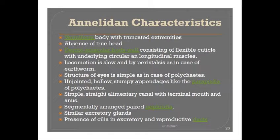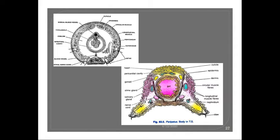The third feature is the dermomuscular body wall, composed of flexible cuticle with underlying circular and longitudinal muscles. Looking at the cross section of one of the annelids — the earthworm — and comparing it with the cross section of Peripatus, we can see the body wall is formed of cuticle, epidermis, circular muscle, and longitudinal muscle. In the same way, the Peripatus cross section also shows a body wall composed of cuticle, epidermis, dermis, circular muscle, and longitudinal muscle — almost the same body wall as the annelids.